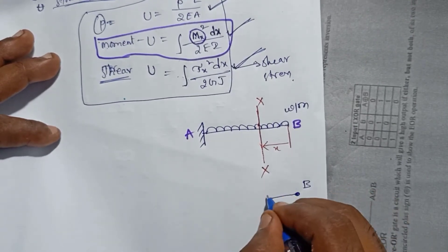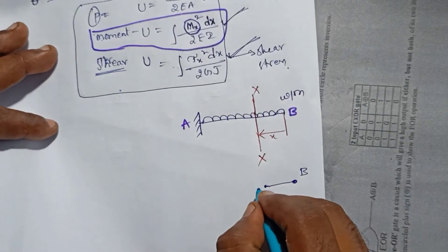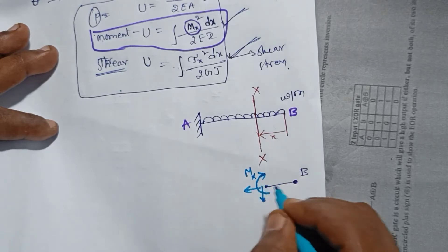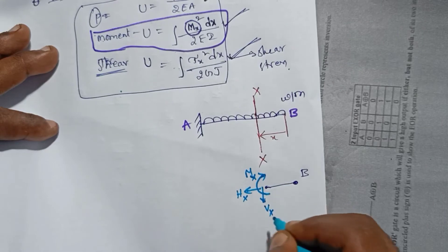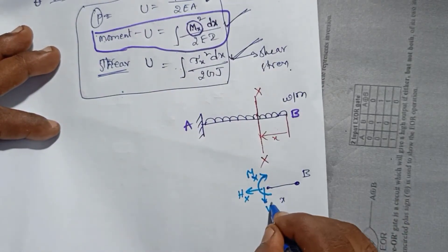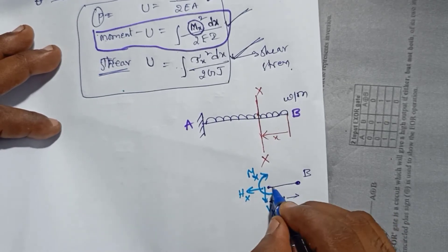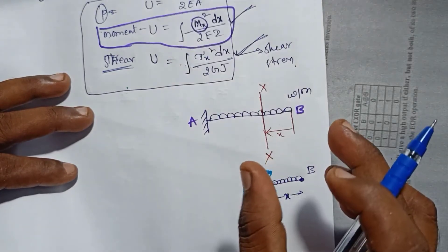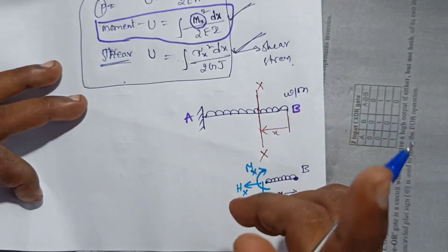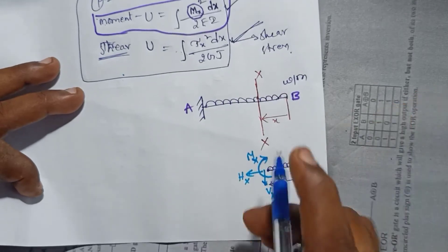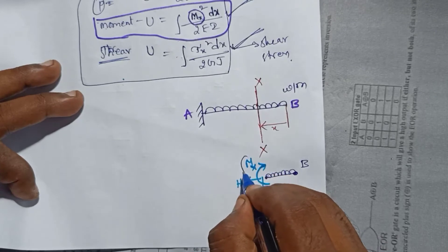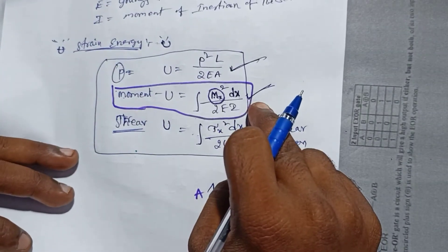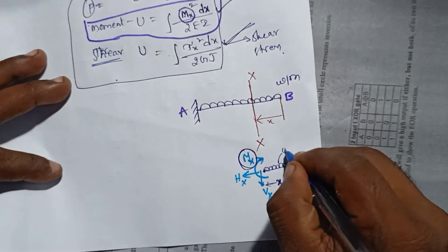This is the bending moment at section x. The moment at x, horizontal force at x, vertical force at x — distance is x. Looking at the equilibrium condition, moments must be equal to zero. I am calculating moments with respect to point X.